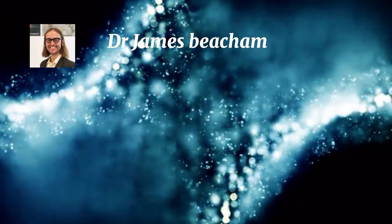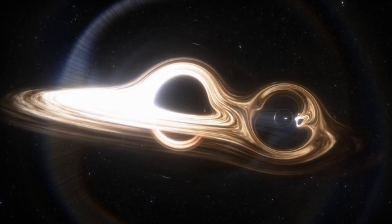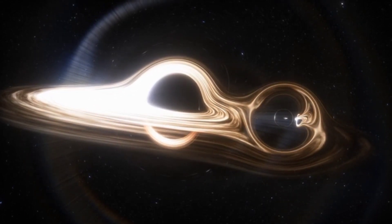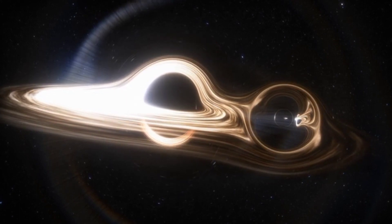To make a black hole out of the earth, you need to pack the entire thing into a volume about the size of a blueberry. Most black holes we know of are much larger than this, with masses that are billions, tens of billions of times that of the sun, and with volumes that encompass our entire solar system.